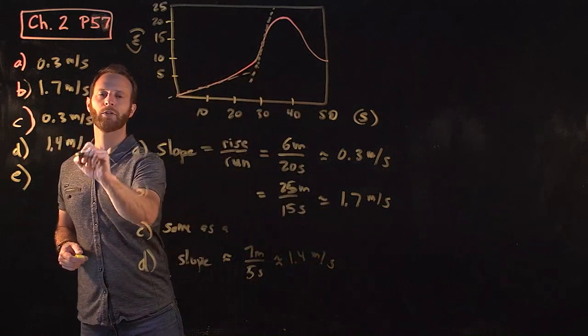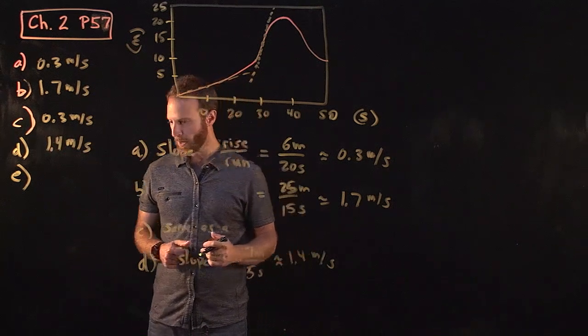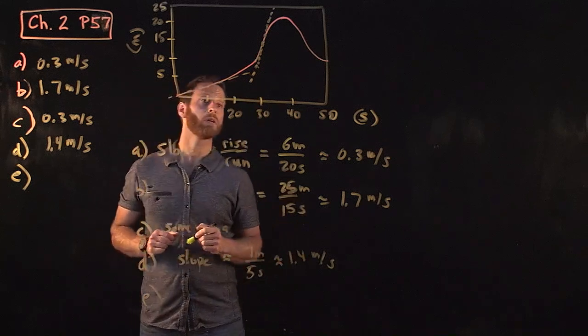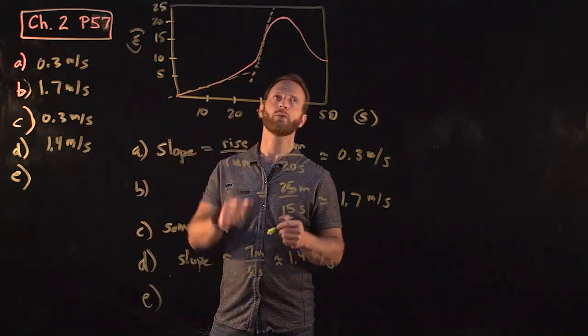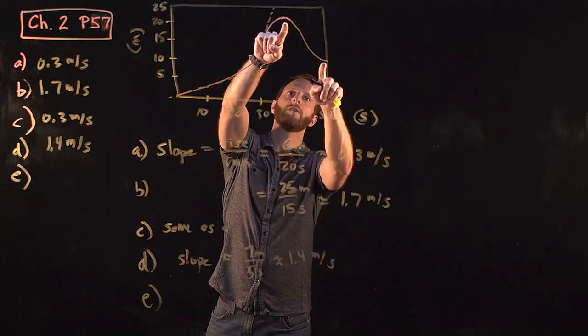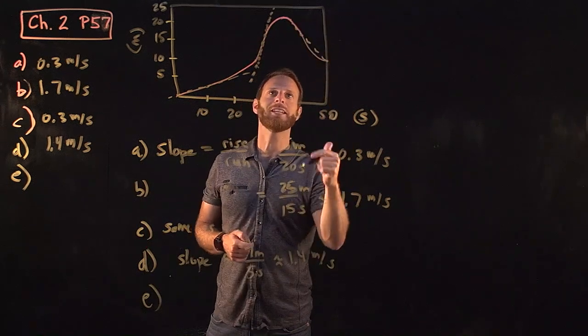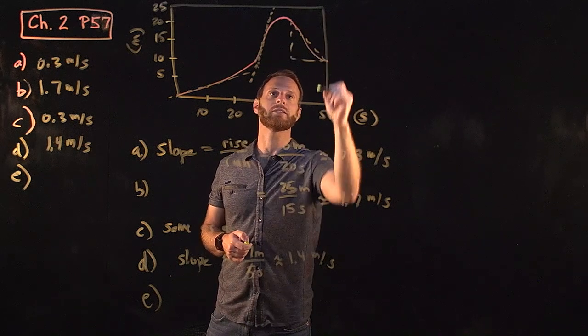Again, don't worry if you're off by plus or minus 0.2 or so. Finally, in Part E, what is the average velocity between 40 and 50 seconds, so roughly from near the top to near the bottom. In this case it's not really a rise, it's a decrease, but the rise is just negative.